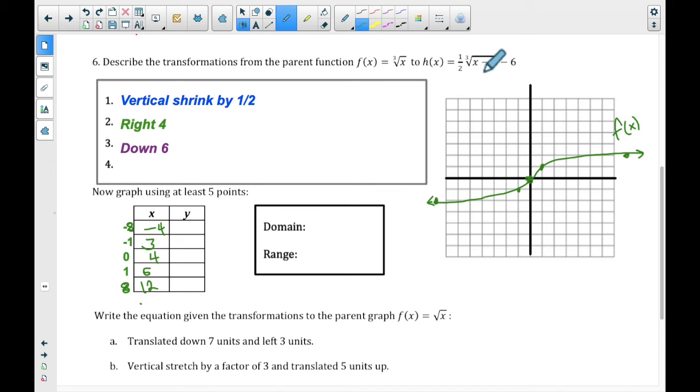Plug into the table, negative 8, cube root of negative 8 is negative 2, half of negative 2 is negative 1, minus 6 is negative 7. Plug into 3, 3 minus 4 is negative 1, negative 1 times 1 half is negative 1 half, minus 6 is negative 6.5. All right, not great to be a decimal, but that's okay. It's just a 0.5, so we'll deal with it. Plug in a 4, we get 0, that's a negative 6.